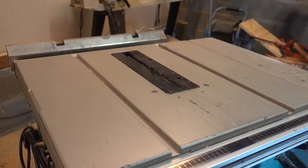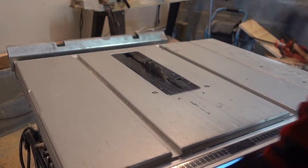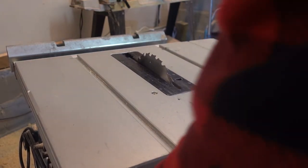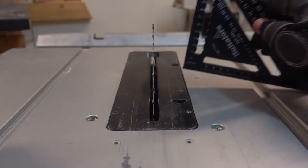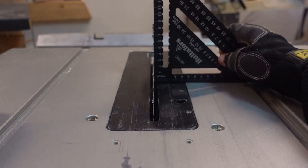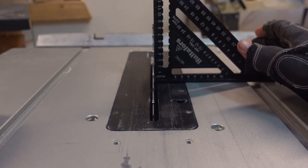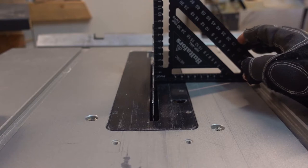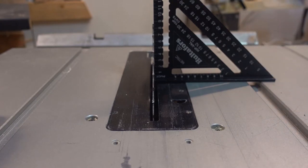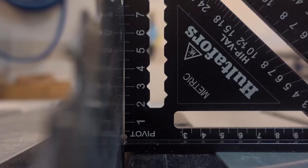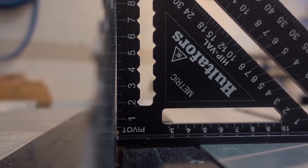To adjust the blade we first start with raising the saw blade to its maximum height. With a square we can easily visualize that the saw blade is not 90 degrees perpendicular to the table. There is a gap of about one millimeter.